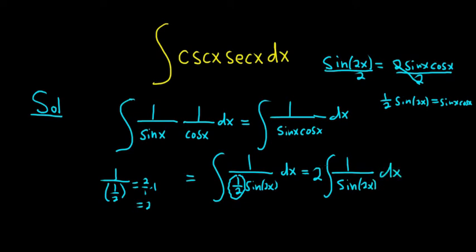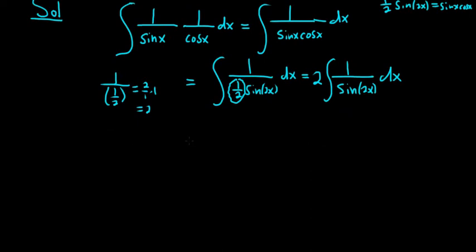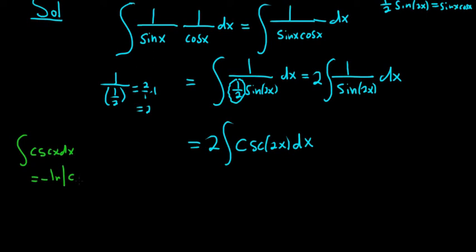And now, 1 over sine is cosecant, so this becomes 2 integral cosecant 2x dx. So there is a formula for the integral of cosecant. So if you integrate cosecant x with respect to x, it's equal to minus natural log absolute value cosecant x plus cotangent x plus c. So this is one of those formulas that is totally worth knowing. It's a bit obscure. Not a lot of people know it. The one for secant is more common. Cosecant just doesn't come up enough, I guess, but it is worth knowing.